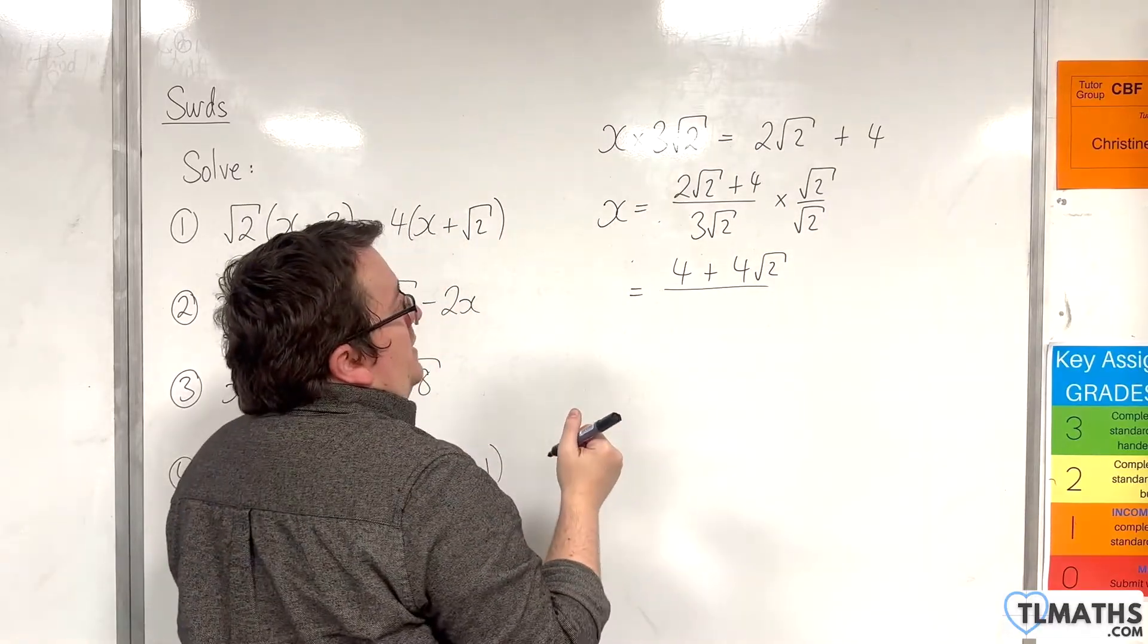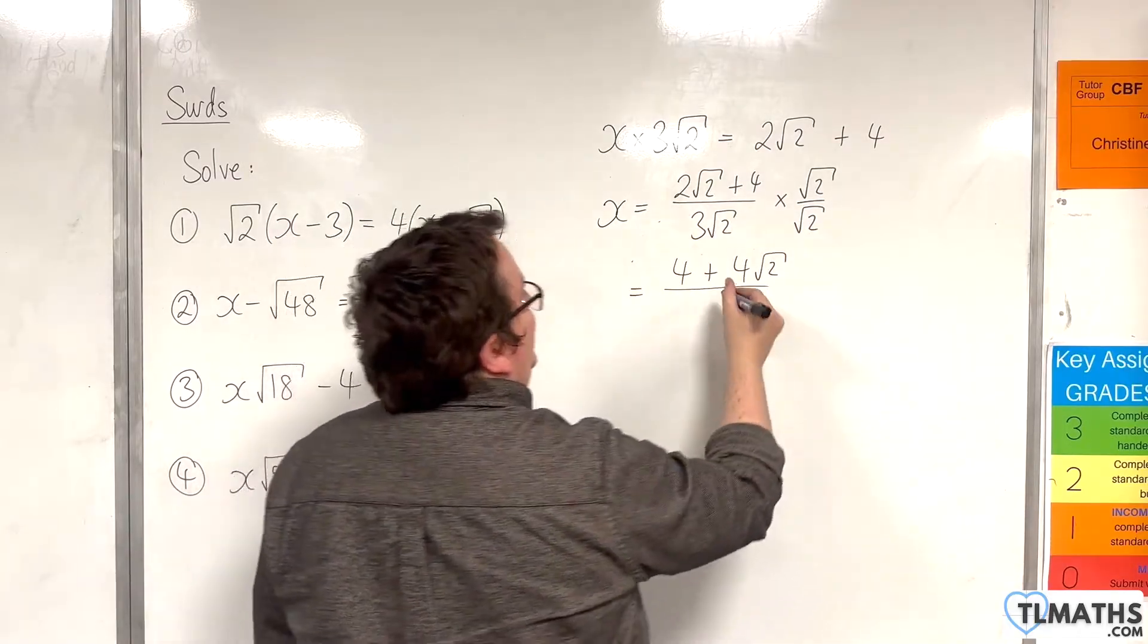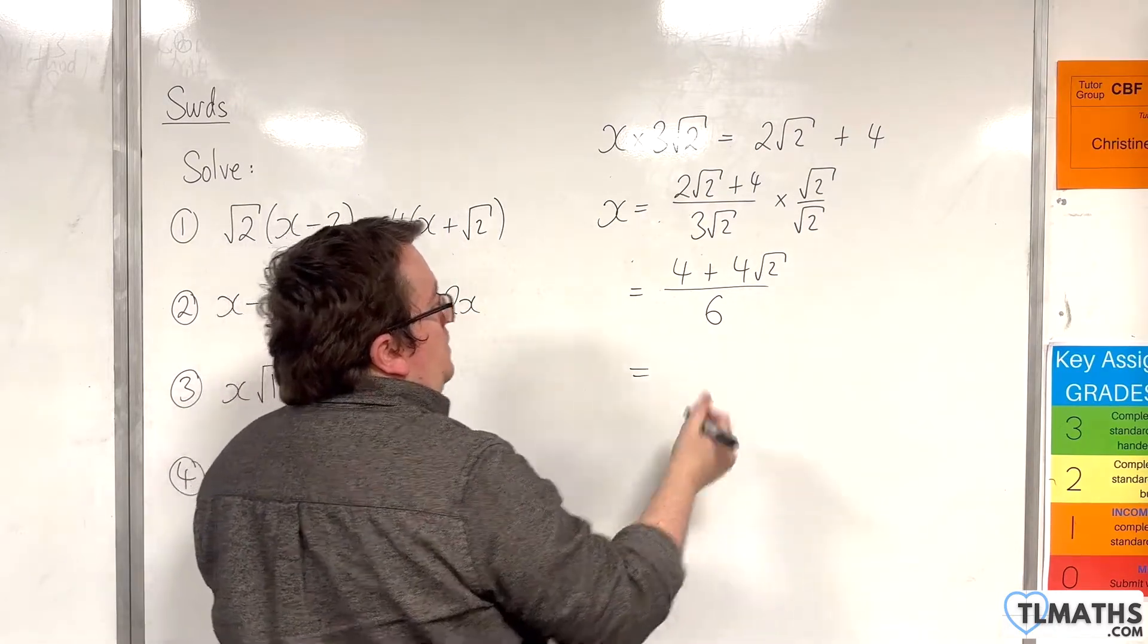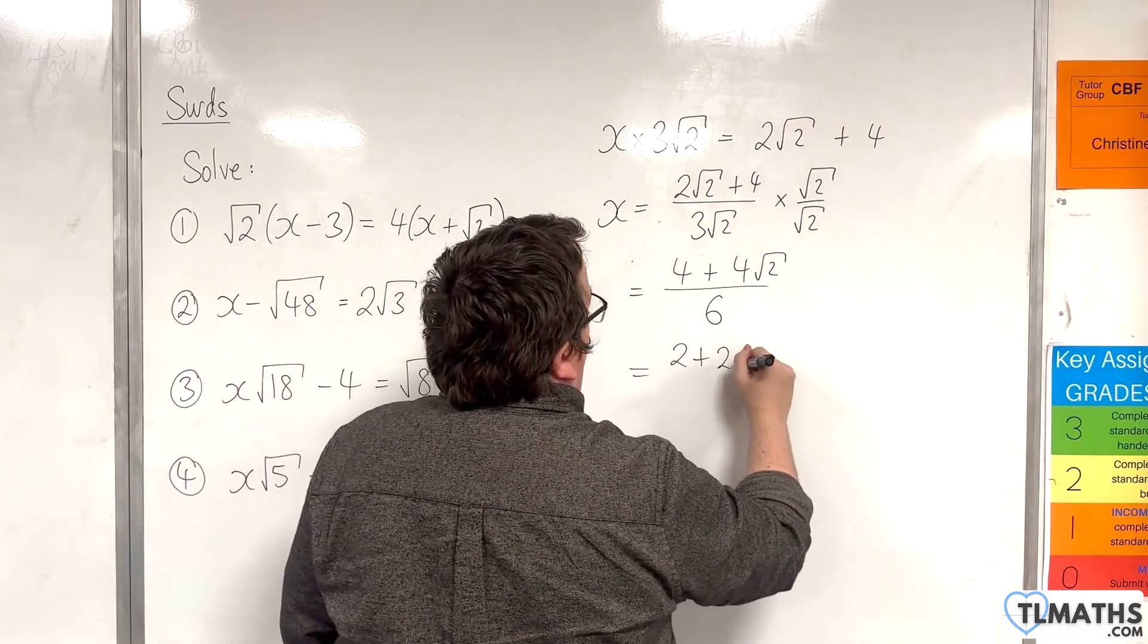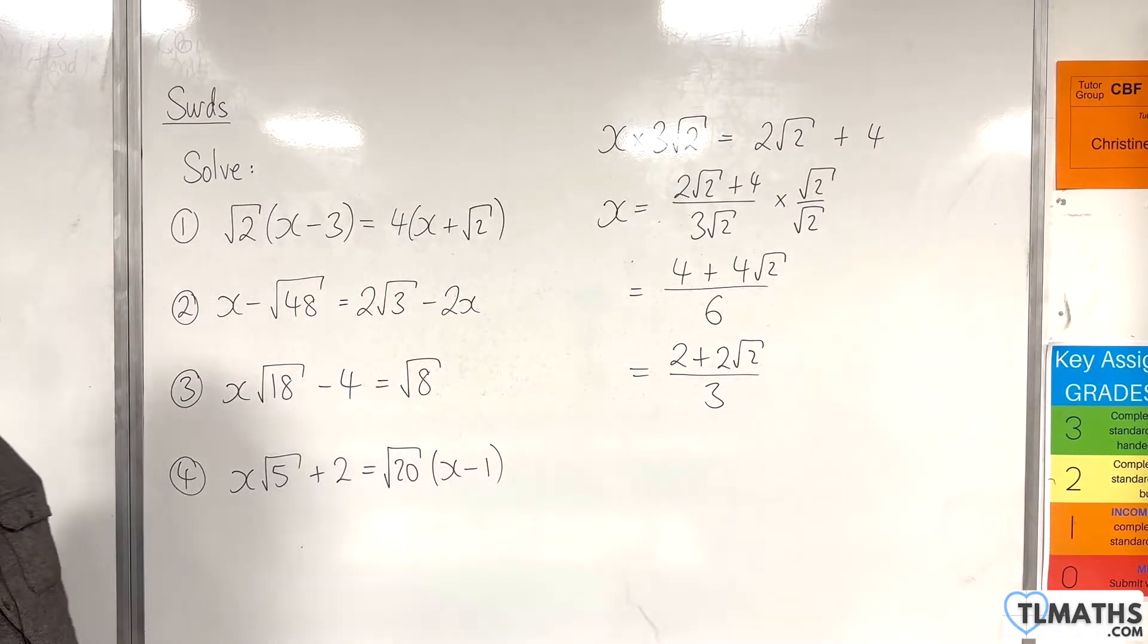And in the denominator, we're going to get 3 root 2 times root 2, so 3 times 2 is 6. Now, that fraction can simplify dividing top and bottom by 2. So we'll have 2 plus 2 root 2 over 3. And that's my answer for number 3.